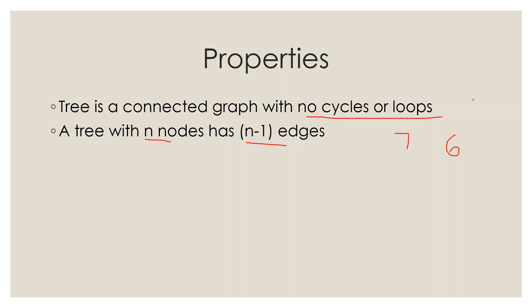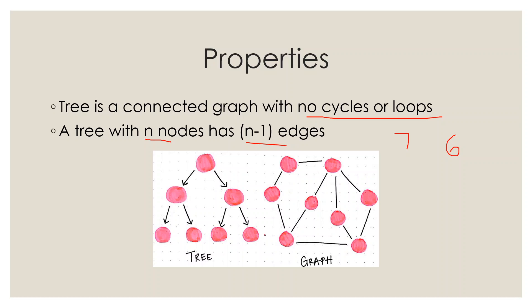A tree with N nodes has N-1 edges — this is an important property. For example, 7 nodes in a tree means 6 edges. We can verify this by counting: 1, 2, 3, 4, 5, 6, 7 — seven vertices, and 1, 2, 3, 4, 5, 6 — six edges. This confirms the property holds.